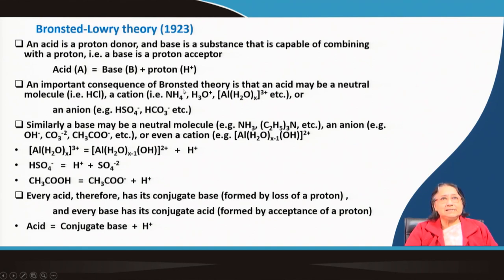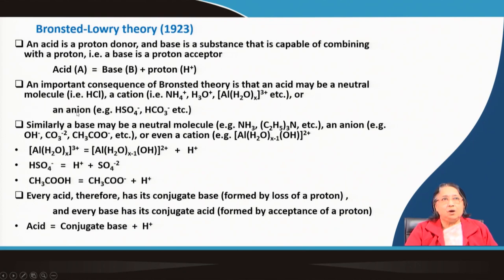By the Bronsted theory we can explain several molecules. For example, a neutral molecule like HCl can be explained as an acid. Even some anions like bisulfate or bicarbonate can also be explained as acids, because bisulfate can give a proton and bicarbonate can give a proton. Ammonium ion can give a proton, hydronium ion can give a proton — so they are acids.